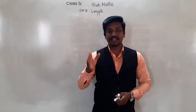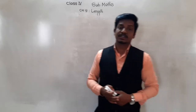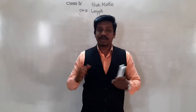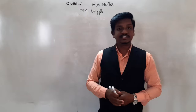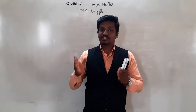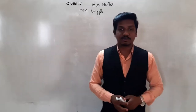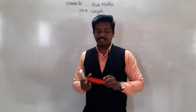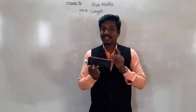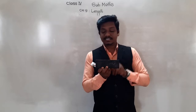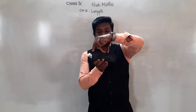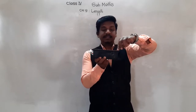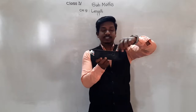Since first standard we have been learning about length. Length means we measure the length of various objects — we check how much that object is long. For example, suppose this is a duster. The length of this duster means the distance between this point and this point. This straight line distance is called the length of the duster.